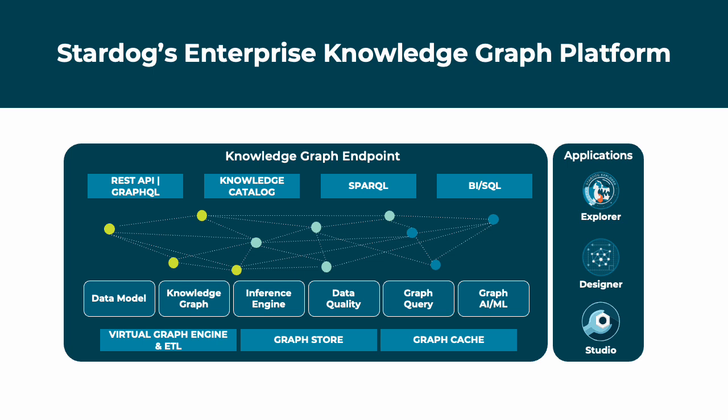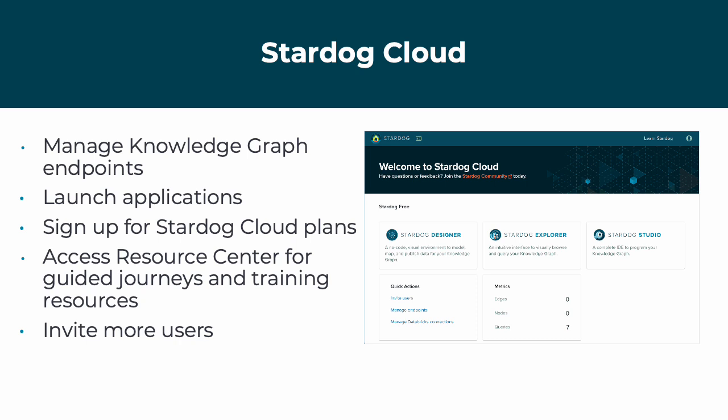If managing your own endpoint sounds difficult or you don't have access to the hardware to do it, let me introduce you to Stardog Cloud. Stardog Cloud is a complete enterprise knowledge graph platform provided as a managed service. Users can manage knowledge graph endpoints, launch applications including Designer, Explorer, and Studio, sign up for Stardog Cloud plans, access the resource center for guided journeys, knowledge kits, and other learning resources, and invite new users and co-workers.